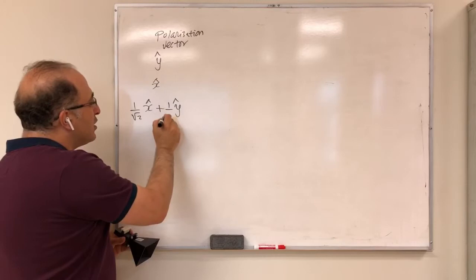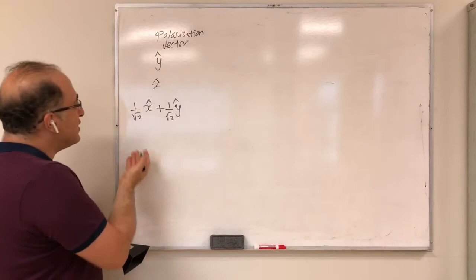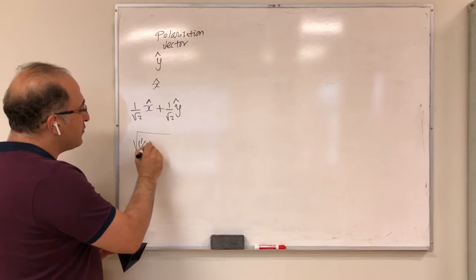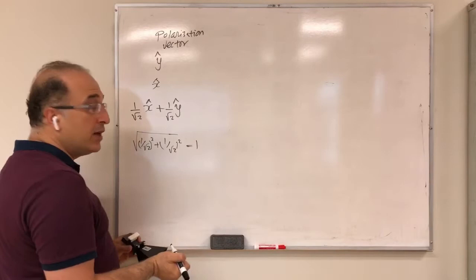So what you do is divide each component by the square root of 2. In that case, the magnitude of this vector is 1 divided by square root of 2 squared plus 1 divided by square root of 2 squared, which equals 1. So this is a unit vector.